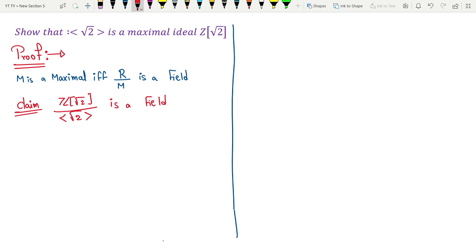Let me consider an element a plus root 2b. Since it is inside the quotient ring, it is of the form coset with root 2. Let me write this as a plus root 2b whole bar, that means it is a coset with this as a representative.